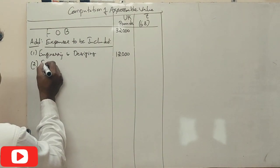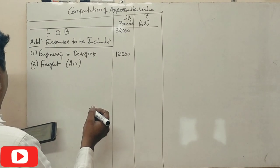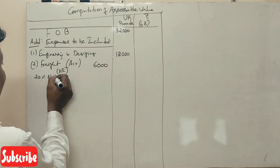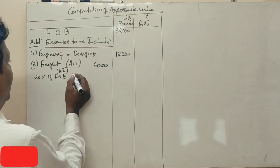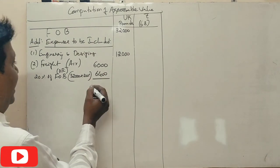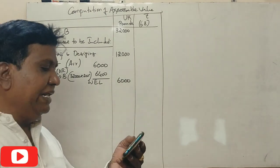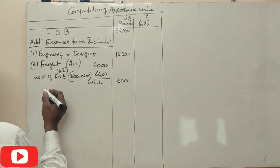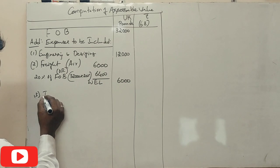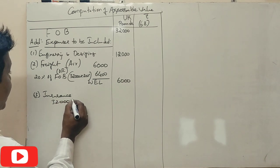Freight - 6,000 pounds. But 20% of FOB, calculate. 32,000 pounds, 20% is 6,400 pounds. So 6,000 pounds is okay. Insurance not known.